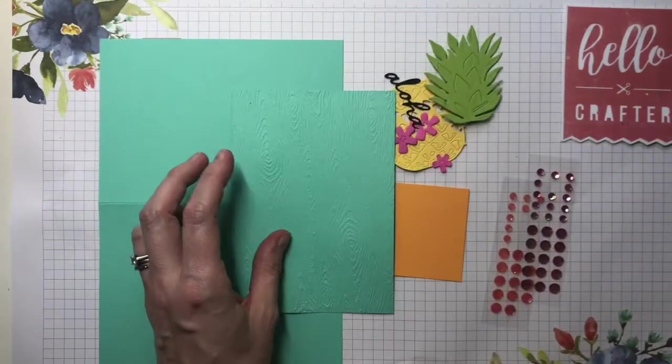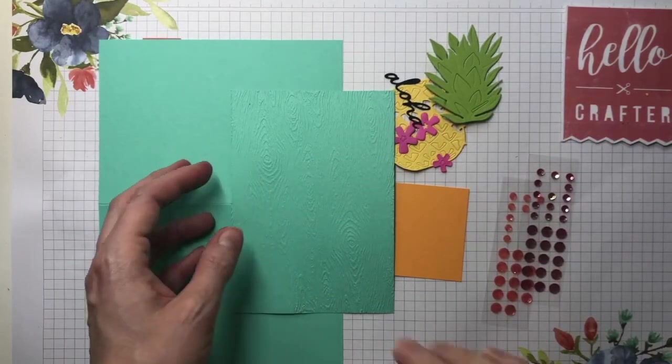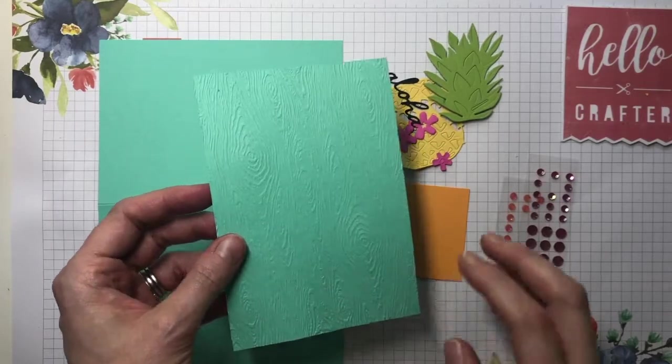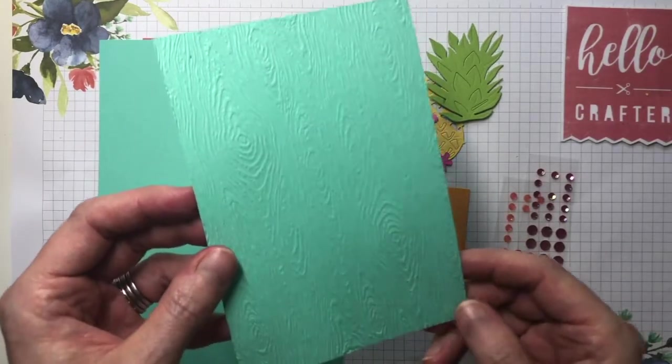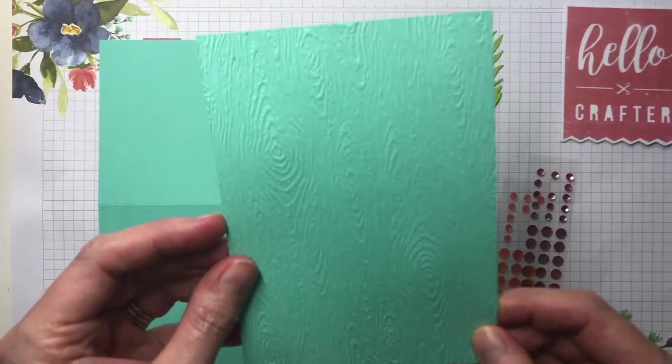This embossing folder is a brand new one and it is called the Timber 3D embossing folder which will be coming out on the 4th of August, so look out for that one. It's really nice, it's got this sort of wood grain effect on it.